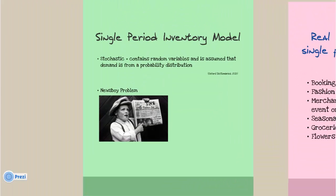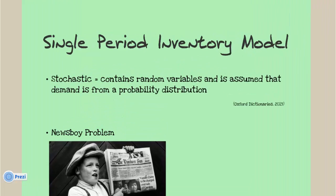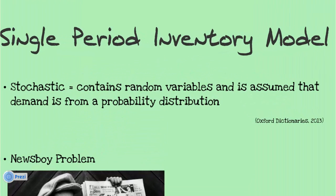In this video we will be focusing more on the single period inventory model. This type of model is described as stochastic. This means that the situation will have random variables and it is assumed that demand is from a probability distribution from a previous period of time.